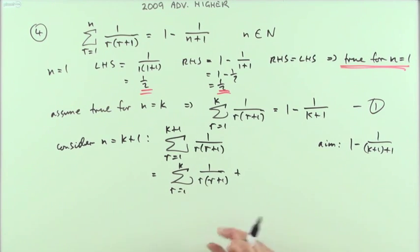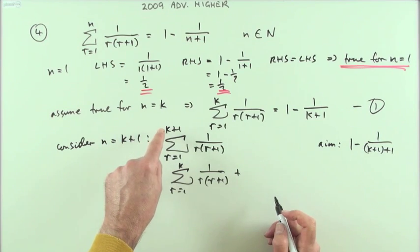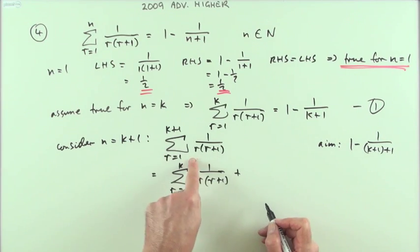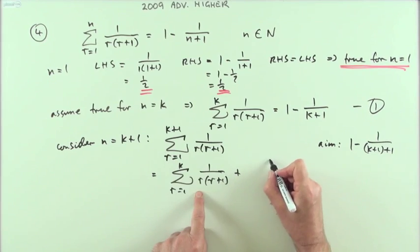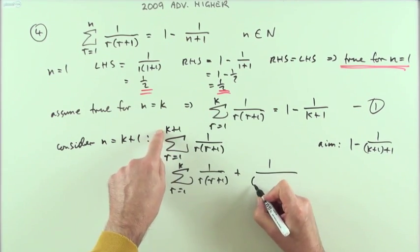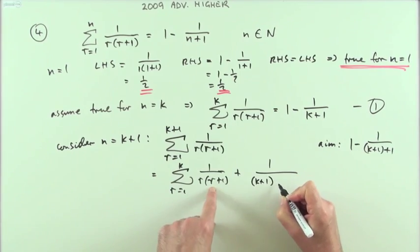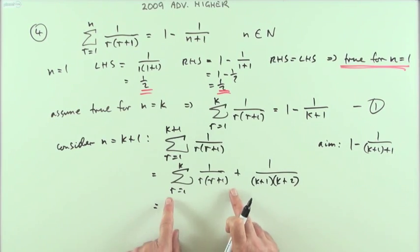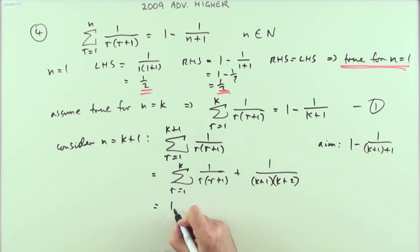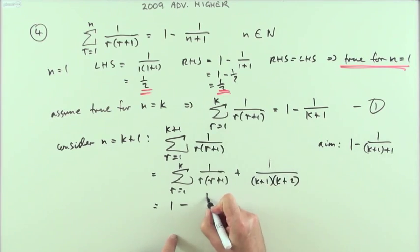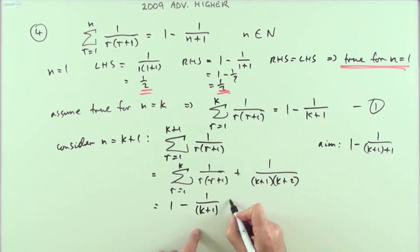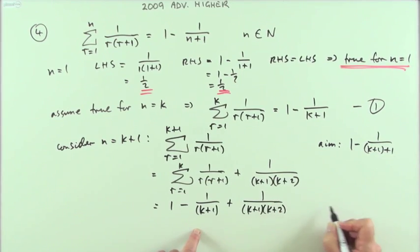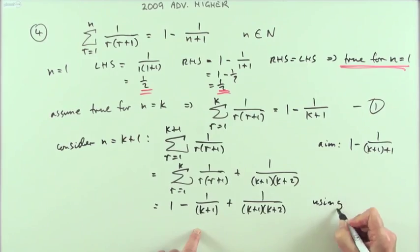Just adding them up as far as k plus the next term. Remember that sigma just saves you writing all the individual terms out. There's only one more term to go on, and that's the term when r is k plus one. So plus one over, and if r is k plus one, it'd be (k+1) times (k+2). Now I'm going to call in my hypothesis. Well, I said that this was equal to that, so that means that thing should equal one minus one over k plus one.